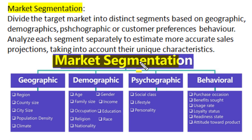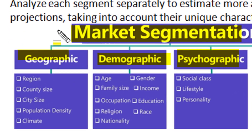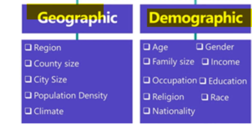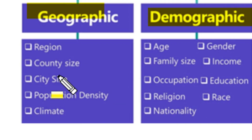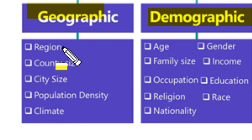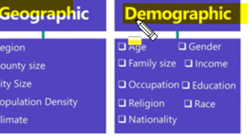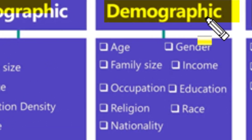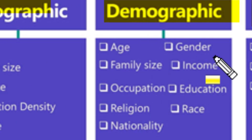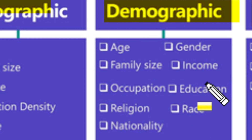Another technique for sales forecasting is market segmentation. This divides the target market into distinct segments based on geographic conditions, demographic divisions, psychographic positions, or the behavior of customers. As per geographical segmentation, we can segment the target market in terms of region, country size, city size, population density, or the climate of the target market geography. One important segmentation is demographic segmentation, based on age, gender, family size, income, occupation, education, religion, race, or nationality.